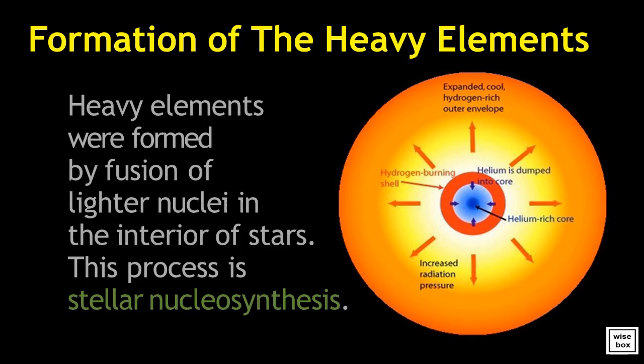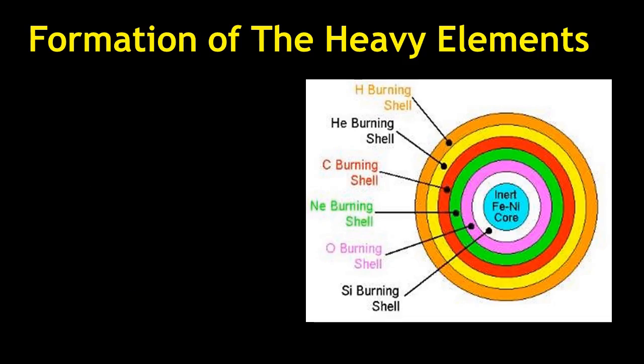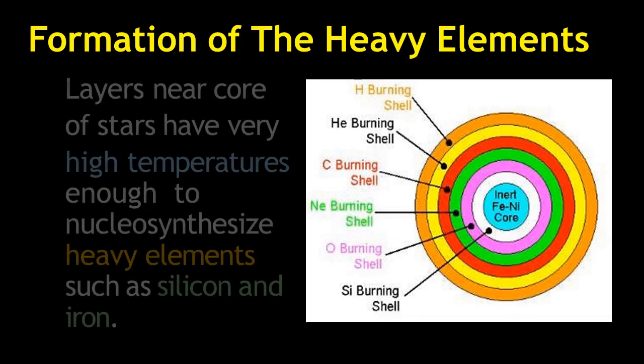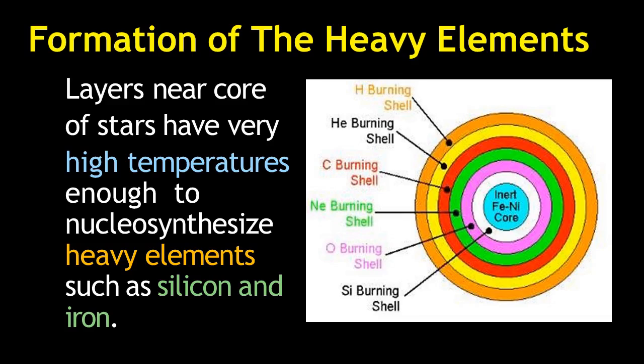Heavy elements were formed by fusion of lighter nuclei in the interior of stars. This process is stellar nucleosynthesis. Layers near the core of stars have very high temperatures enough to nucleosynthesize heavy elements such as silicon and iron.